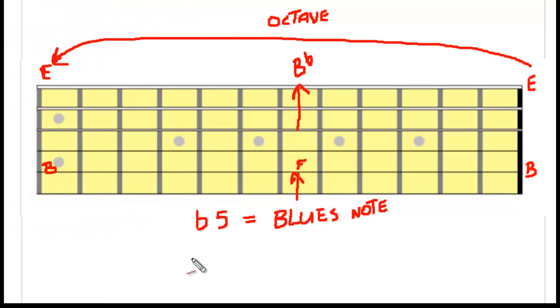Another interesting thing about the flat 5 note is that it's also referred to as the blues note. So it's the extra note that's added into a minor pentatonic scale to create a blues scale.